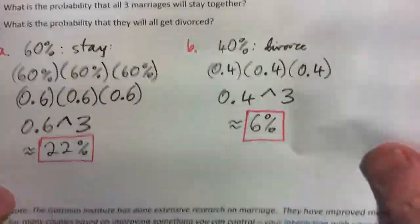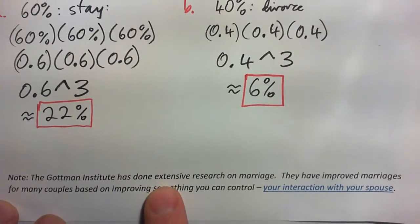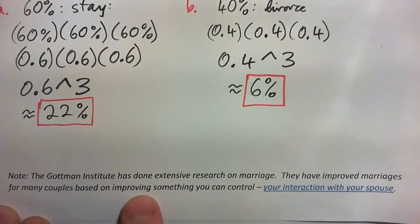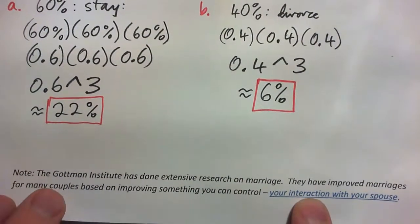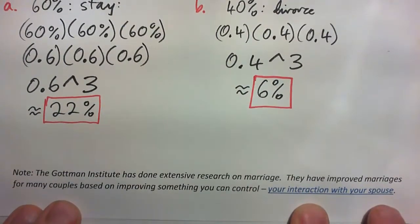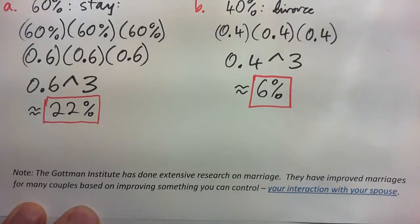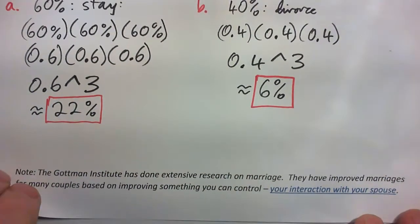If you have time, at some point in the course it'd be fun to look at the Gottman Institute at University of Washington, which did extensive research on marriage. They've improved marriages for many couples based on improving your interaction with your spouse. They can predict, just by watching a couple talk to each other for about 15 minutes, whether or not they'll stay together — to about 94% accuracy. Pretty interesting stuff.